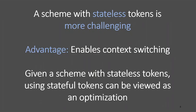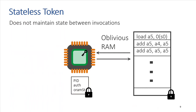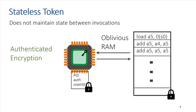Using a stateless token is much more challenging. The advantage is that it enables context switching — you can run a program for a while, stop, and switch to another. With stateless tokens, the token gives out its state to the adversary at the end of each invocation. To prevent the adversary from learning or tampering with the state, you employ authenticated encryption. You then expect the adversary to send back the most recent state for the next execution step.